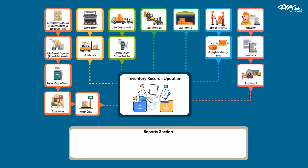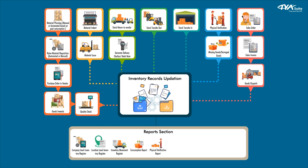Reports section: company level inventory register, location level inventory register, inventory movement register, consumption report, physical verification report, cost of goods sold report, expired goods report, slow and fast moving goods report, stock aging report.